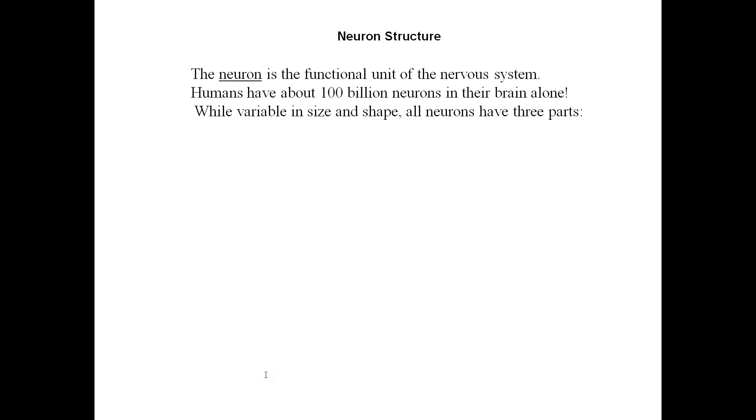We're going to look at some different types of neurons today, but we're specifically going to take some time and go through the structure and function of a typical motor neuron. Neurons are functional units of the nervous system and can be categorized into three groups: sensory neurons, interneurons, and motor neurons.